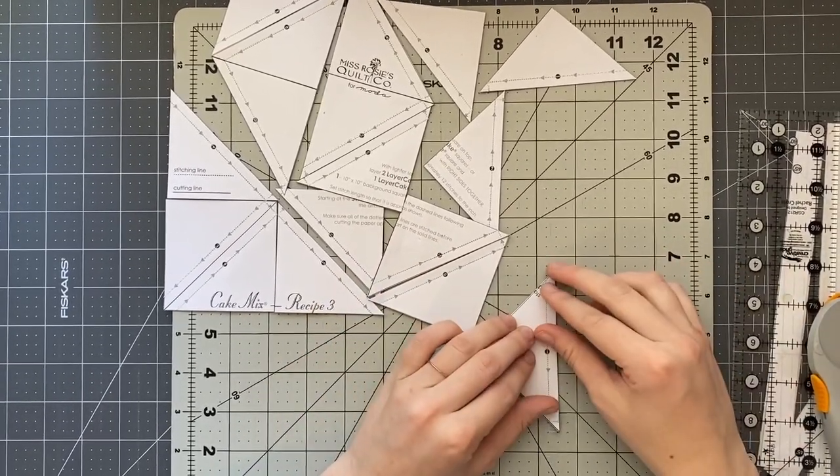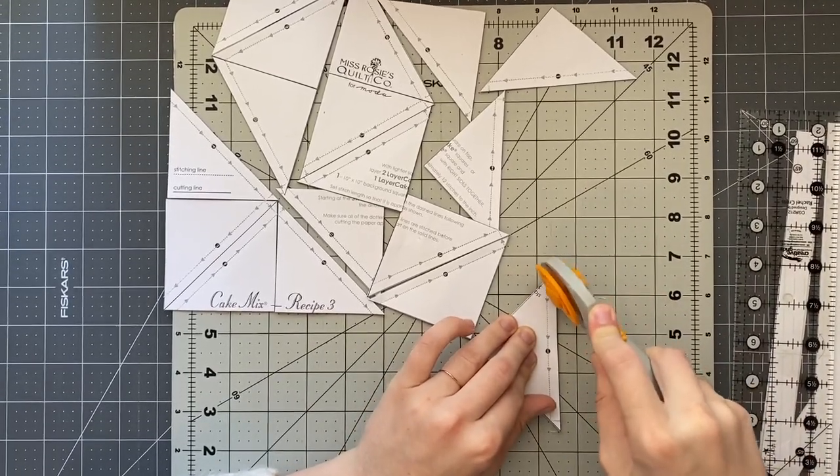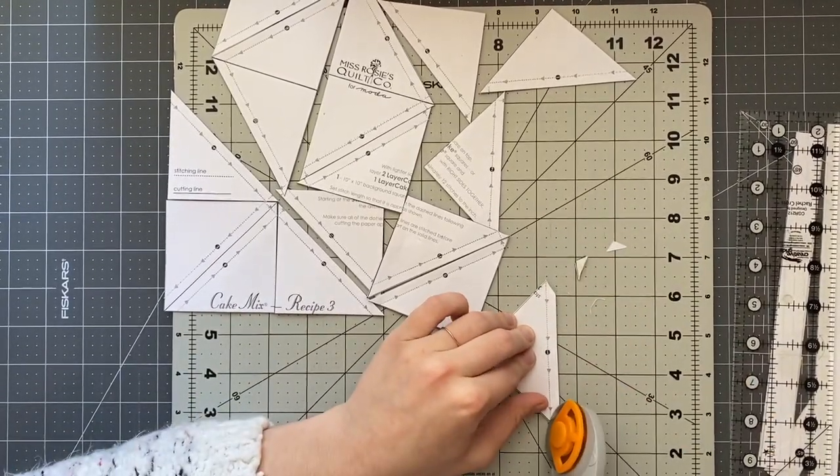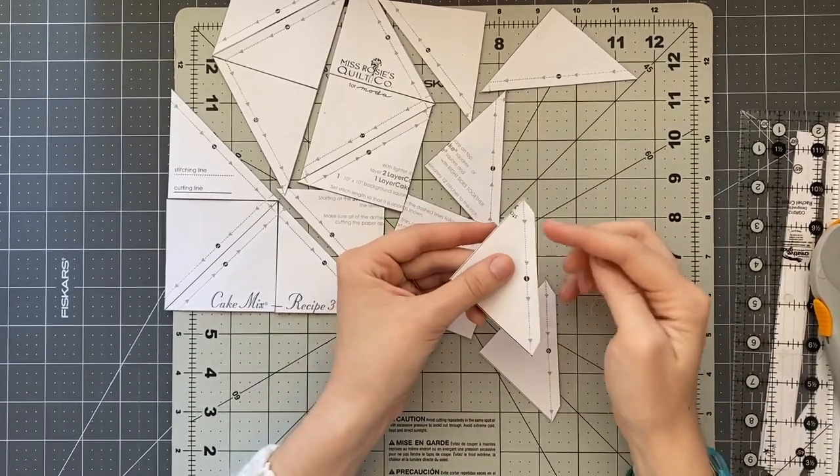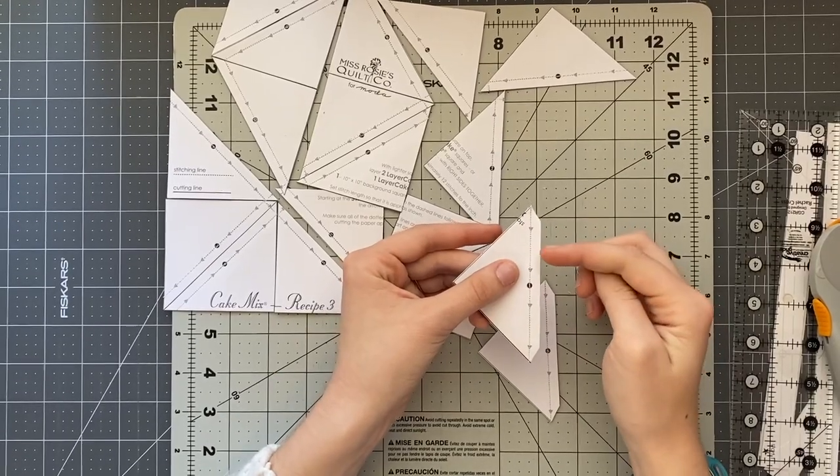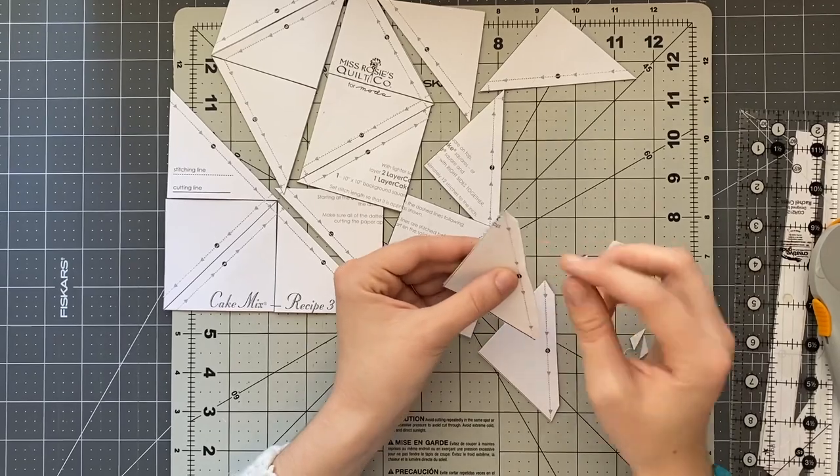And if you're familiar with working with half square triangles you know that there's like a little tail that happens here and that's annoying to trim off so I like to do it while the half square triangle is still folded closed so I just kind of without using a ruler or anything trim off my little tails here.